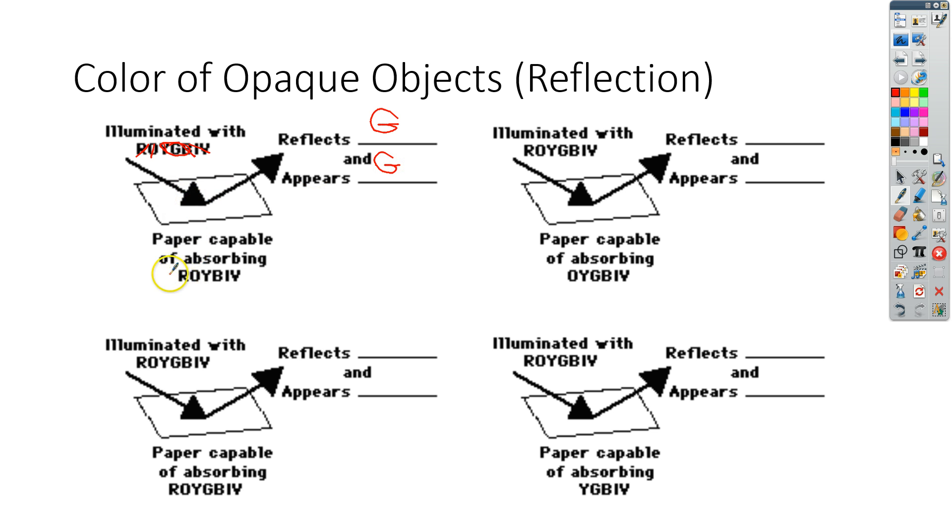So green paper actually absorbs red, orange, yellow, blue, indigo, and violet. And it reflects just the green. So that's what you actually see.